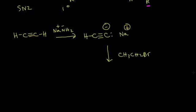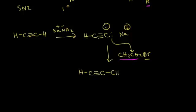The lone pair of electrons on the terminal carbon attacks the carbon bonded to the bromine. The halogen leaves, and we put the ethyl group onto the alkyne. The product is H–C≡C–CH₂CH₃: we've alkylated our alkyne.